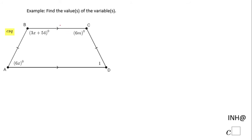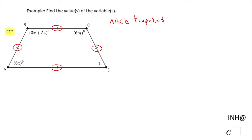First of all, you should notice that BC and AD are parallel, which means ABCD is a trapezoid. But also you should notice these two sides are congruent, and that means ABCD is in fact an isosceles trapezoid.